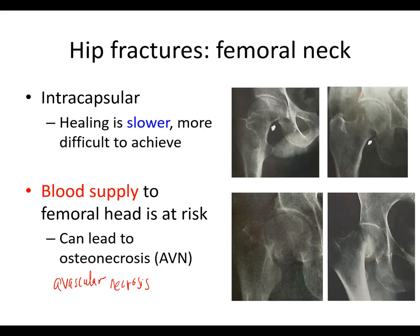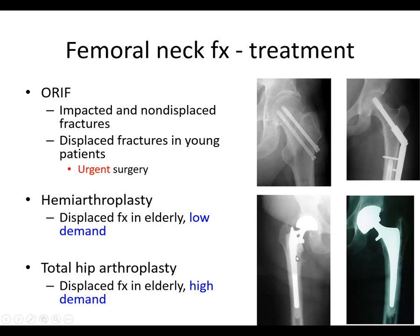Here are some fracture examples. Here's a fracture that's relatively non-displaced. Here's a fracture that's probably displaced — they're considering this impacted; the fracture line is about here, and you can see a step off where the fracture head is supposed to go. And these are examples of displaced femoral neck fractures where the head is completely off. You can see the femoral neck right there, and then the head is displaced down here.